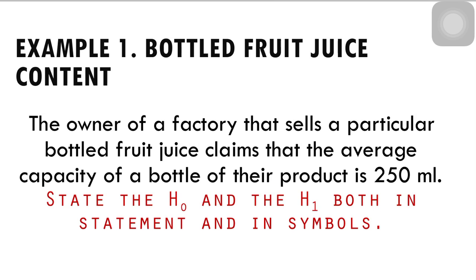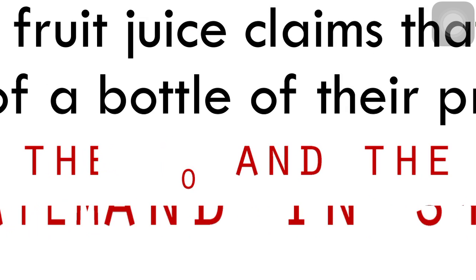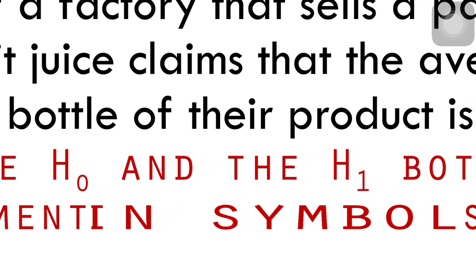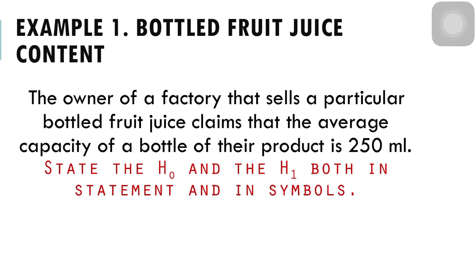The owner of a factory that sells a particular bottle of fruit juice claims that the average capacity of a bottle of their product is 250 ml. By the way, the symbol for the null hypothesis is H sub 0, while the symbol for the alternative hypothesis is H sub 1. The null hypothesis is that the capacity of a bottled fruit juice is equal to 250 ml. The alternative hypothesis is that the capacity is not equal to 250 ml.